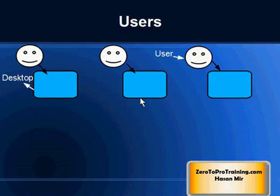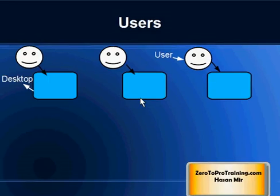In a company we have users, also known as end users. They are using the system, using applications, using software — and these are employees of the company. Not every employee is a user of a computer, but all users of computers are employees. In reality, some contractors also use the system.